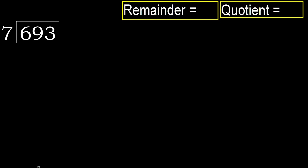693 divided by 7. 6 is less than 7, therefore move to the next digit. 69 is not less, therefore we work with 69.